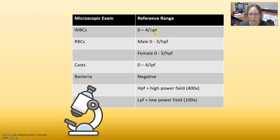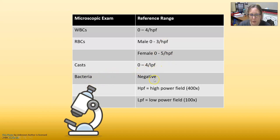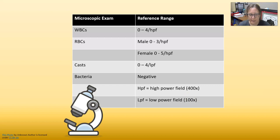For the microscopic exam, white cells are 0 to 4 per high power field. Red cells for a male are 0 to 3 per high power field, and for a female 0 to 5 per high power field. Casts are 0 to 4 per low power field, and bacteria should be negative. HPF (high power field) is 400x magnification using the 40x objective, and LPF (low power field) is 100x magnification using the 10x objective, knowing that oculars also magnify 10 times.